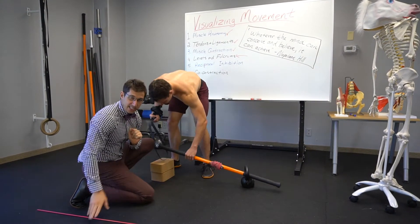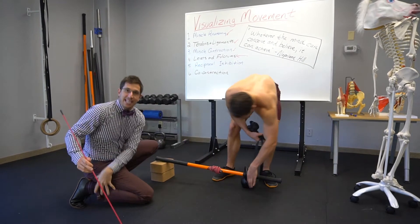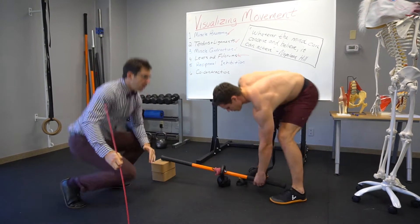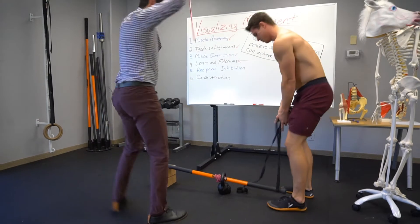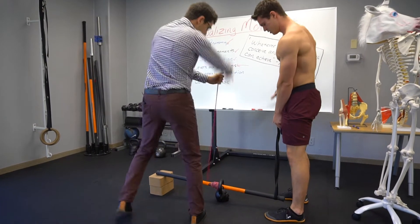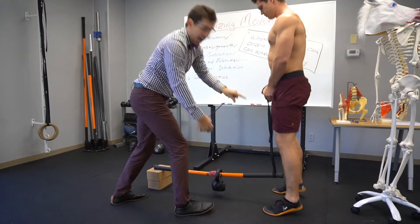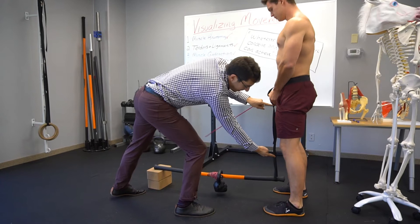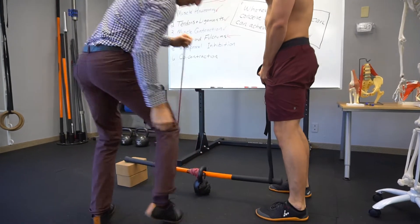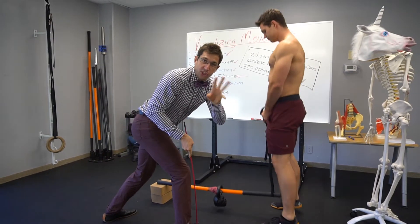The second type of lever occurs in the ankle joint, where the weight is in the middle — that's your body weight coming down on top. The calf muscles, when they contract, the ankle moves.